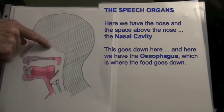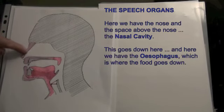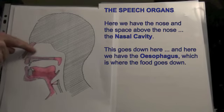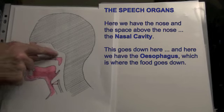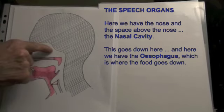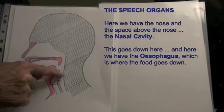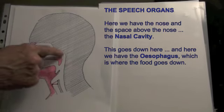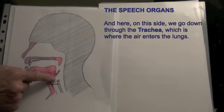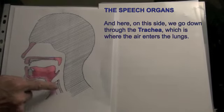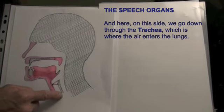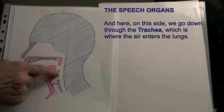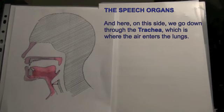Here we have the nose and the space above the nose — the nasal cavity. This goes down here and here we have the oesophagus, which is where the food goes down. And on this side we go down through the trachea, which is where the air enters the lungs.